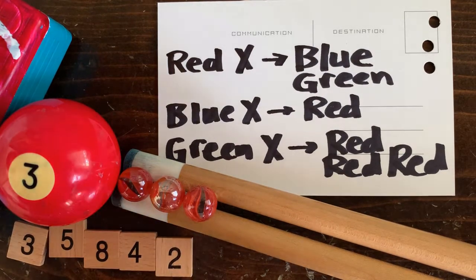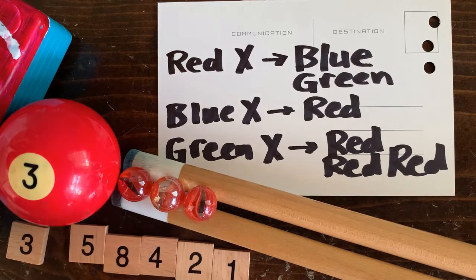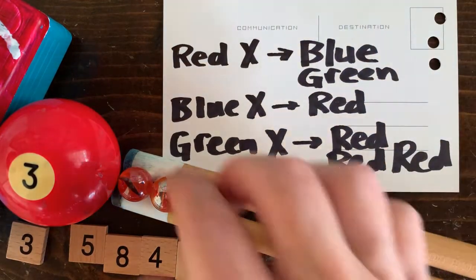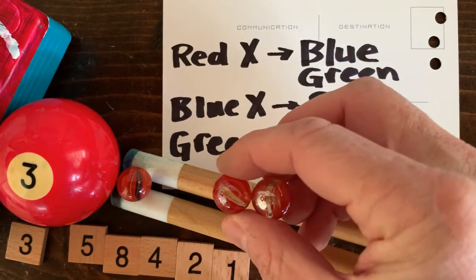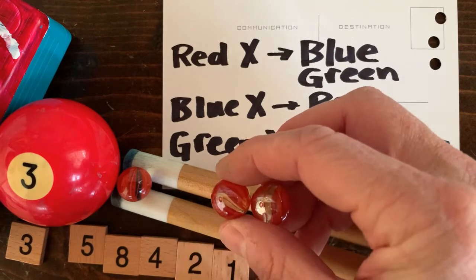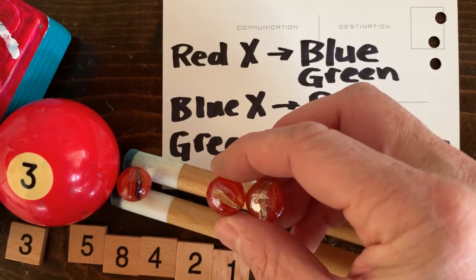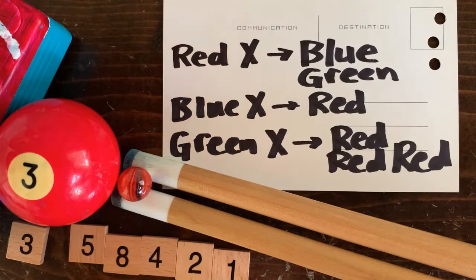Let's run it on the computer. We start with 3 red marbles. Now, we're always going to take 2 marbles from the left. In this case, we call this pattern red x because the left marble is red. We don't care what color the right marble is. And the program says replace red x with blue green. So we're going to put blue green here on the right.